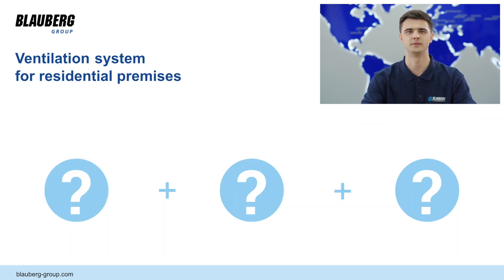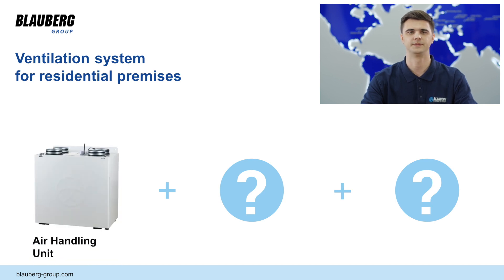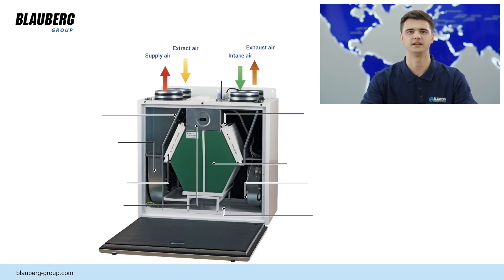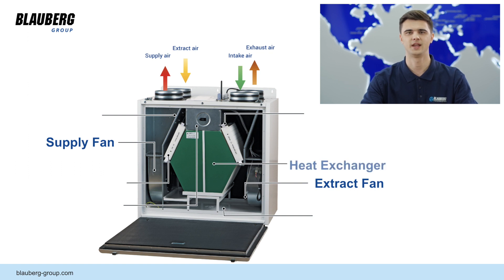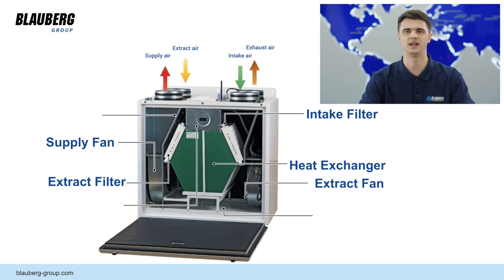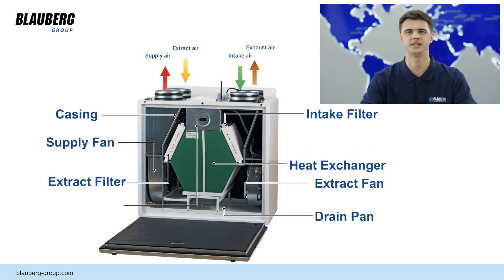Now, when we have a proper formula for a modern ventilation system, we can divide it into components and see what solutions Blauberg Group can offer. The first element is an air handling unit. Let us take a quick look at the main elements of every air handling unit: supply and extract fans, responsible for the power and efficiency of air movement; a heat exchanger, which transfers energy between two air flows; intake and extract filters, which protect AHU elements and provide filtration of intake air; casing, responsible for heat and noise insulation; and a control system, which controls all processes in and outside the unit. Advanced systems control everything from fan speed and filter contamination to the CO2 level in your living room.